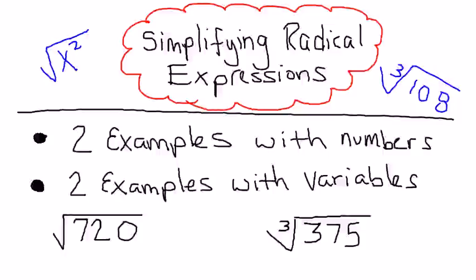Hi, I'm going to do a couple quick examples of how to simplify radical expressions. I'll do a couple with numbers and then a couple with variables. You'll probably be asked to do problems where you have a number, a coefficient, and variables inside your radical sign. But if you can handle these, you'll be able to handle those with no problem. Those are just like having two or three little problems within one problem.